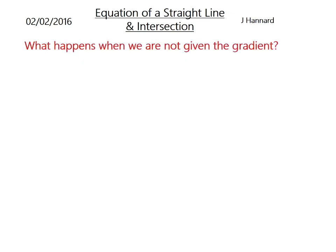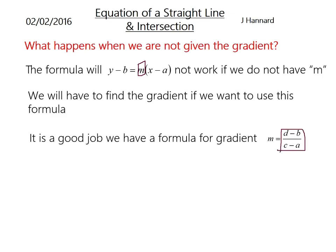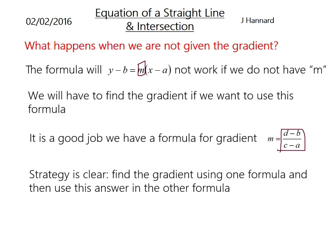But what happens if we're not given the gradient? Well a couple of lessons ago we learned about how to work out m if you're given two coordinates. So we'll have to find the gradient if we want to use the formula y minus b equals mx minus a, because it doesn't work if you don't have an m. So it's a good job we have a formula for gradient, which is back take back over front take front. So that's a blast from the past, just a couple of lessons ago. So hopefully you'll remember that. The strategy is clear: find the gradient using the formula, and then use the answer in the other formula. So that m there, once you've worked that out, you can paste that straight into this equation here and work out your equation of a line.